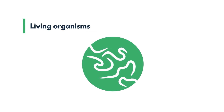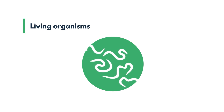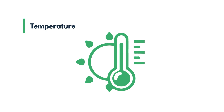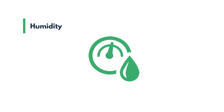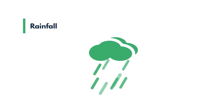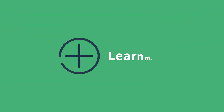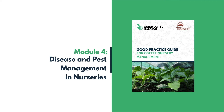In addition, IPM plans must be constantly updated since pests and diseases are living organisms that are affected by changes in temperature, relative humidity, precipitation, or wind speed, among other factors. To learn more about how to identify pests or diseases in your nursery, consult Module 4 of the Good Practice Guide for Coffee Nursery Management in the section Disease and Pest Management in Nurseries.